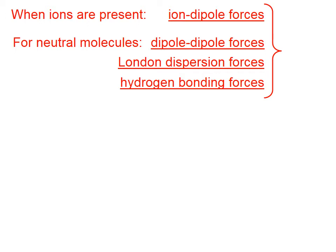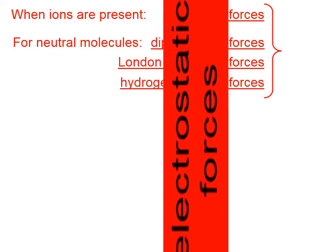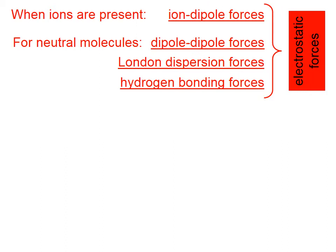There are four types of intermolecular forces: ion-dipole, dipole-dipole, London dispersion, and hydrogen bonding forces. All of these are electrostatic in nature, which means that they deal with the distribution of electric charge among chemical species.